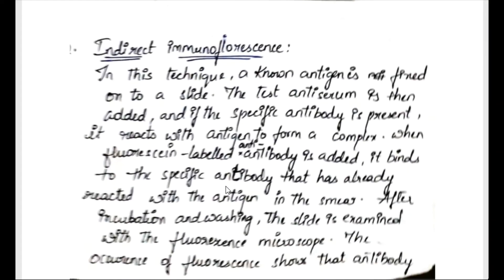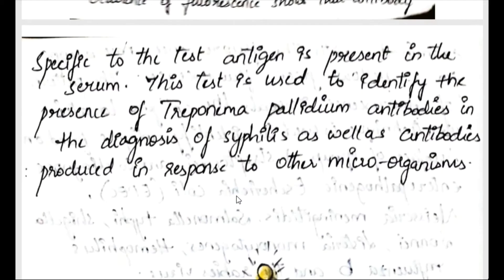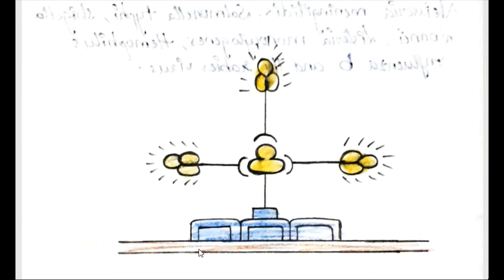In indirect immunofluorescence, a known antigen is fixed onto the slide, and then the test antiserum is added. The test serum contains antibodies, and if the specific antibody is present it reacts with the antigen to form an antigen-antibody complex. When fluorescent-labeled antibodies are then added, they bind to the specific antibody that has already reacted with the antigen — that is, they bind to the antigen-antibody complex.